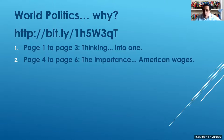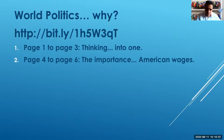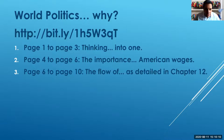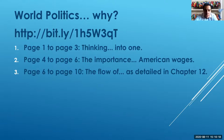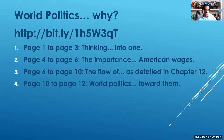Those that get number two are reading page four to page six, from where it begins 'the importance,' all the way until a paragraph that ends 'American wages' on page six. Those that get number three will read page six to page ten, from where it begins 'the flow of,' and they will stop on page ten where it says 'at the tail in chapter 12.' Those that get number four will read page ten to page twelve, from where it says 'world politics' all the way to where a paragraph ends 'toward them.'